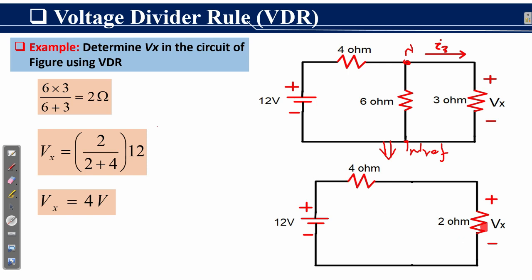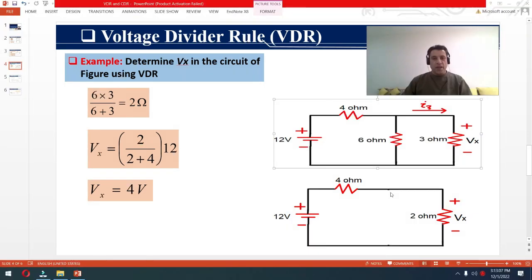Now the 4-ohm and 2-ohm resistors are connected in series with the 12-volt source, making this circuit suitable for the voltage divider rule. Vx equals 2 over 2 plus 4, times 12. The 2-ohm resistor is the one across which we find the voltage drop, 2 plus 4 is the total series resistance, and 12 is the applied voltage. From this expression, Vx equals 4 volts. Please subscribe, like, and share the EECEP channel. Thanks for watching!